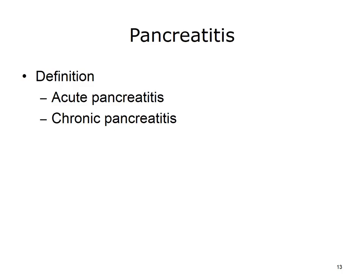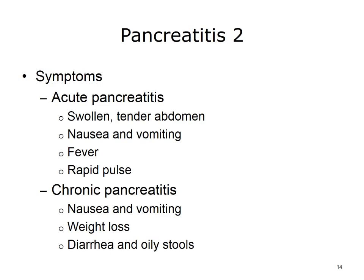A number of other diseases and medicines can also cause chronic pancreatitis. Symptoms for acute pancreatitis include swollen and tender abdomen, nausea and vomiting, fever, and a rapid pulse. Symptoms for chronic pancreatitis include some of the same symptoms but also additional ones: nausea, vomiting, weight loss, diarrhea, and oily stools.